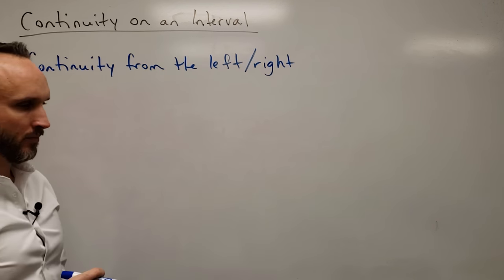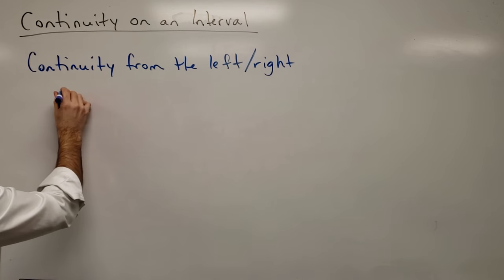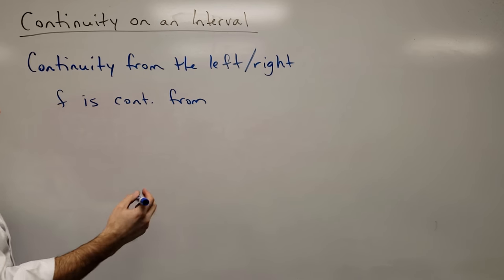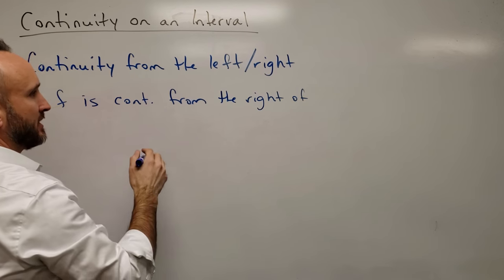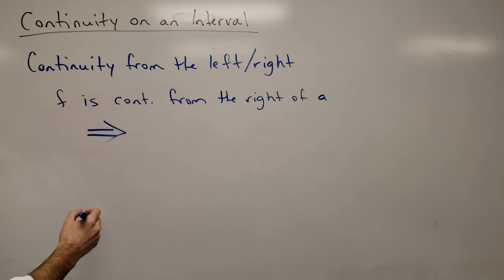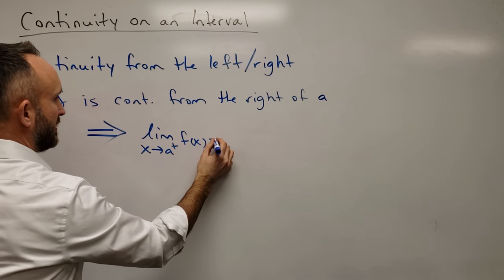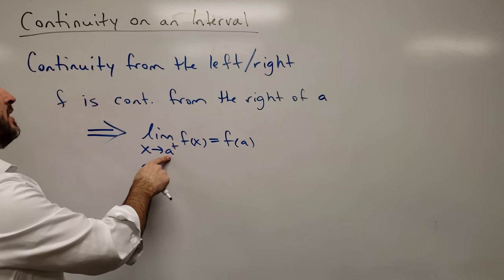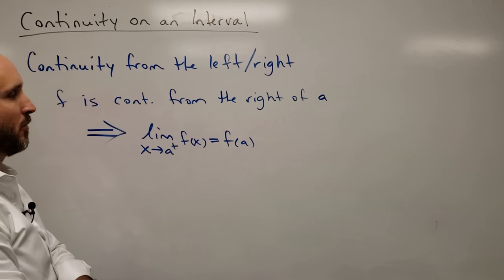Continuity at a value means continuity from both sides. If we say f is continuous from the right of a, that means the limit as x approaches a from the right of f(x) equals the output of the function at a. So instead of approaching a from both sides, we approach a from the right, and if that limit equals the output of the function, then the function is continuous from the right of a.